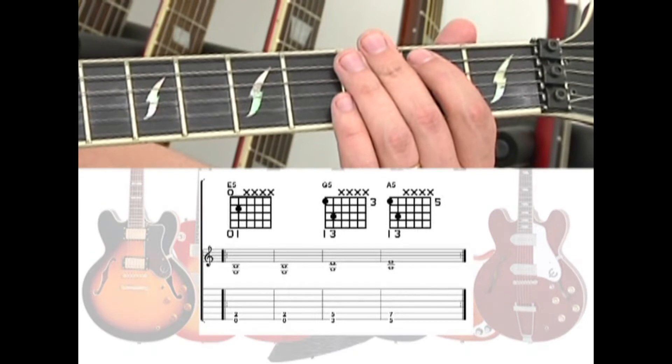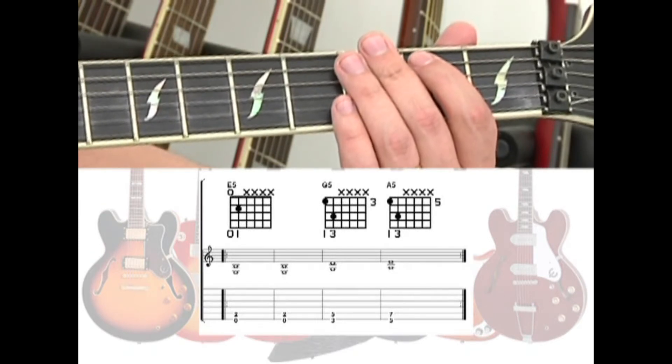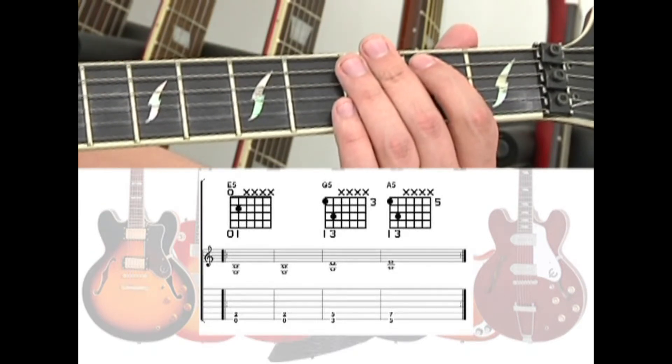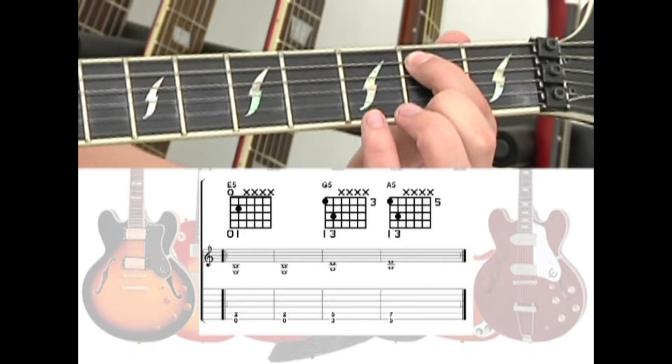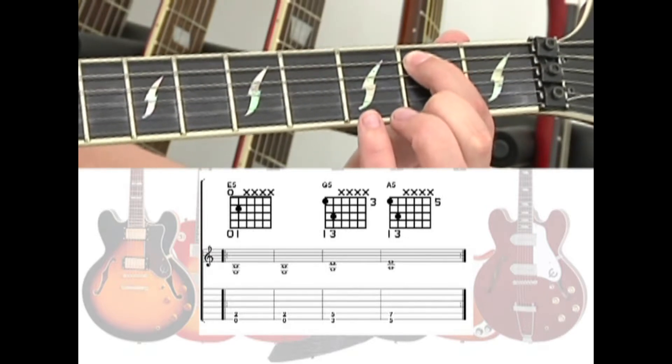The rock song starts out very simple using only three power chords. Start with the open E5 for the first two measures. One, two, three, four. One, two, three, four.